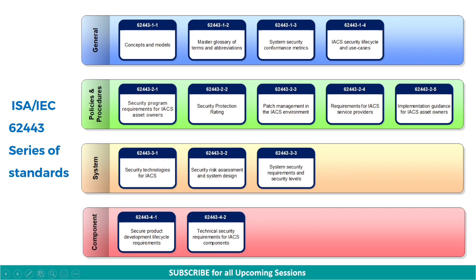Now let's understand the various sections or parts of the 62443 standard. As you can see on the screen, the standard has four sections: General, Policies and Procedures, Systems, and Components. All these respective sections have their own subsections.